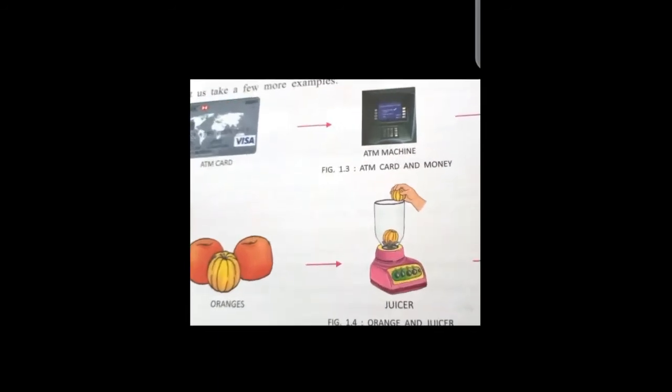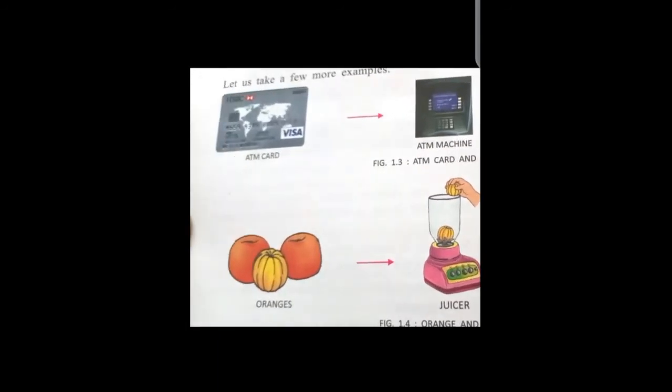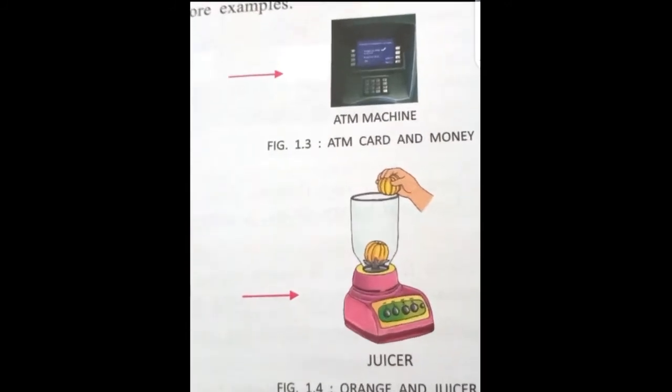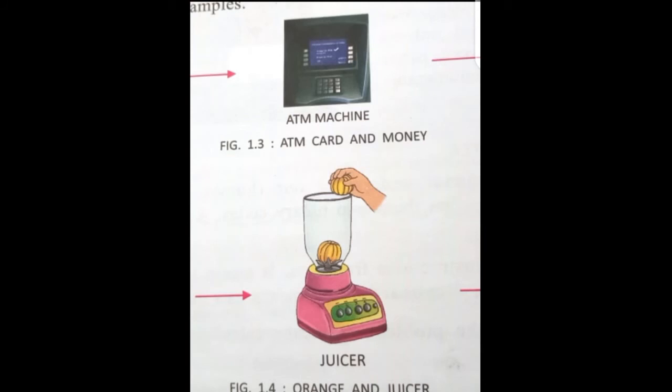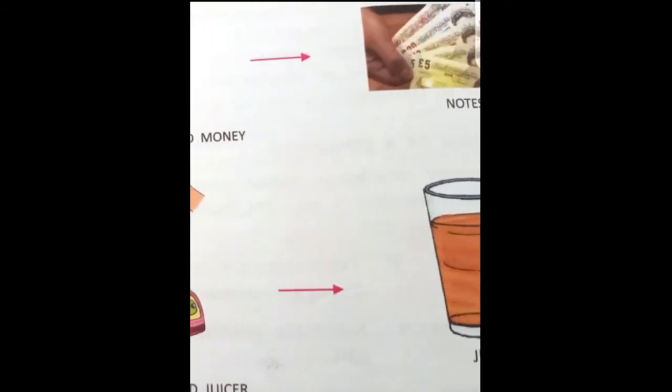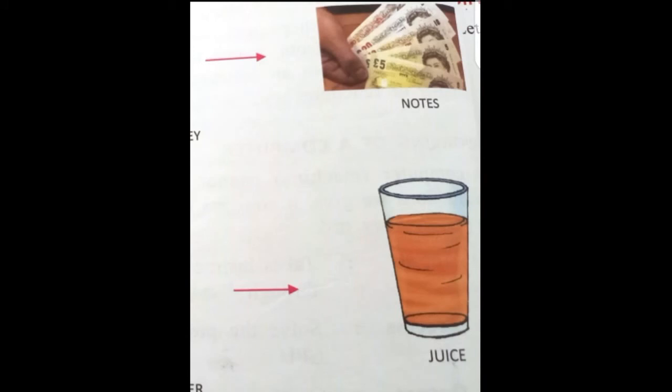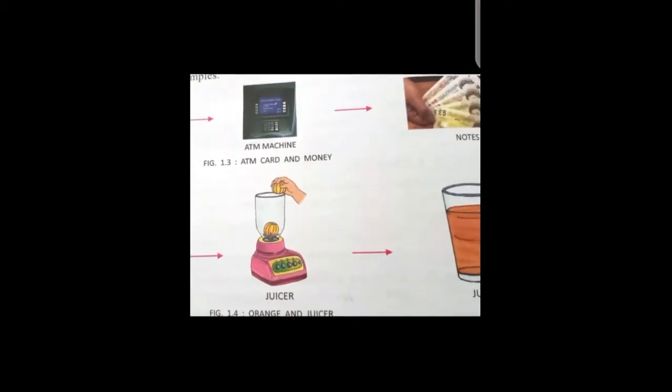I have another example from daily life so you understand this topic better. This is an ATM card. Your parents must have ATM cards. You swipe the ATM card in the ATM machine and write how much money you need. What do you get as output? You get the money. So you input the ATM card, the machine processes it, and in the result, as output, you get the notes, you get the money.